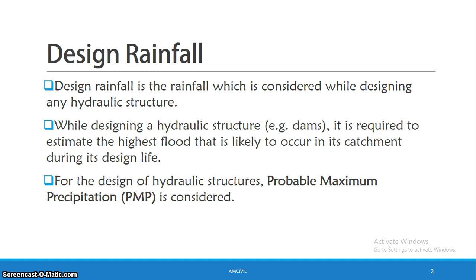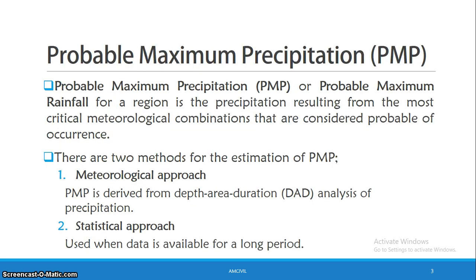Then we will consider the design of rainfall. If we consider the design of rainfall, the rainfall is a probable maximum precipitation. So, what is probable maximum precipitation? It is the precipitation resulting from the most critical meteorological combinations that are considered probable of occurrence in the catchment area. That is the PMP.